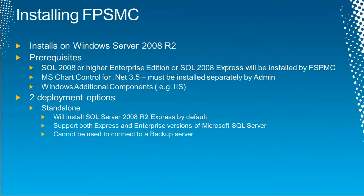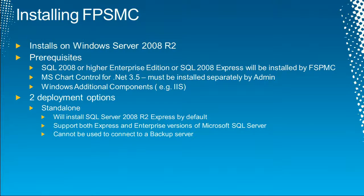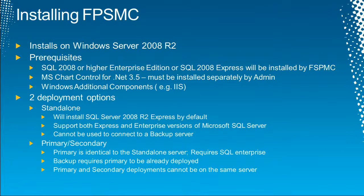We have two deployment options. First is a standalone deployment, which installs SQL Express by default and supports both SQL Express and Enterprise Edition — though if you install a standalone server, you can't later make it part of an active-passive installation. The other option is primary and secondary installation, where you'd install your primary, then a secondary, and have the two back each other up.